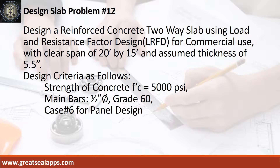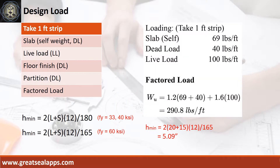Design criteria: strength of concrete is 5,000 PSI; main bars are half-inch diameter, grade 60; case number 6 for panel design. Given uniform load for a 5.5-inch thick slab is 69 pounds per square foot, commercial live load is 100 pounds per square foot, other dead load for floor finish and partition is 40 pounds per square foot, for a total factored load of 290.8 pounds per square foot.